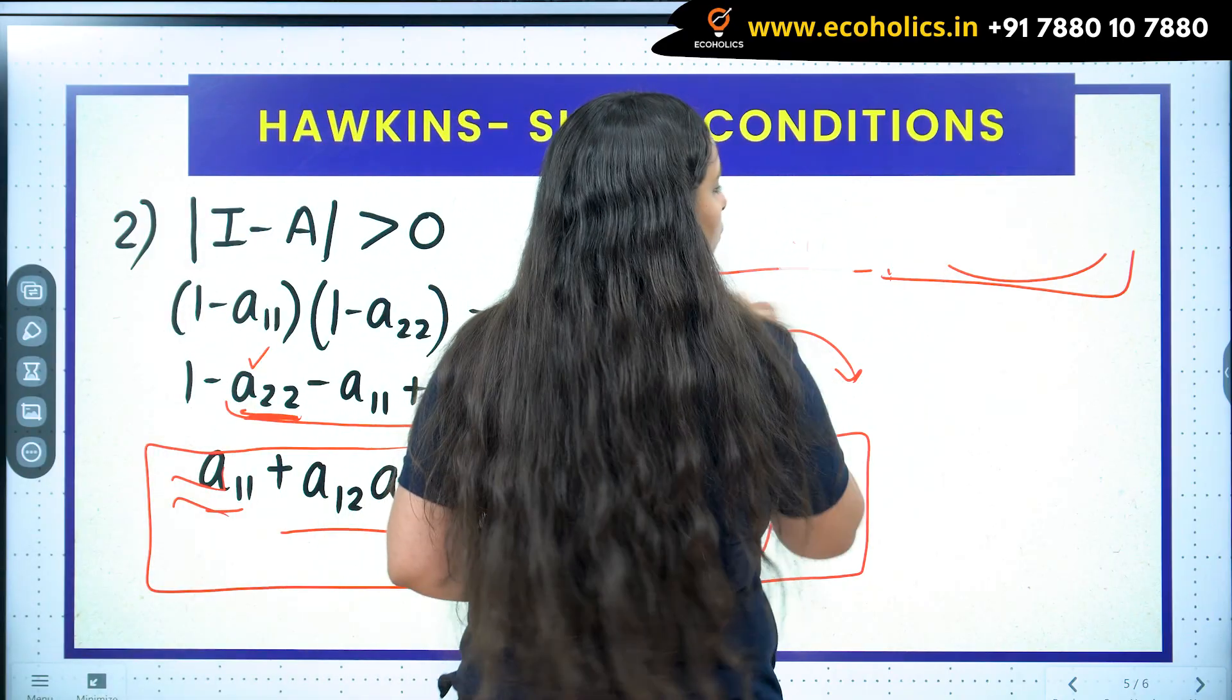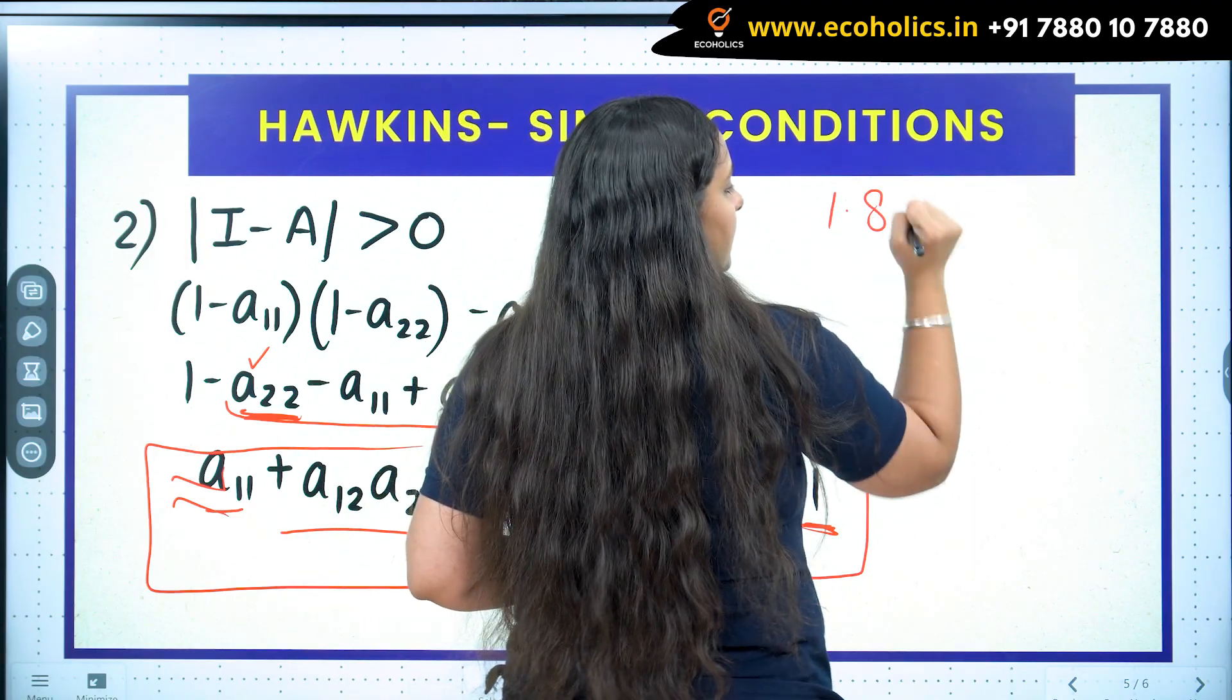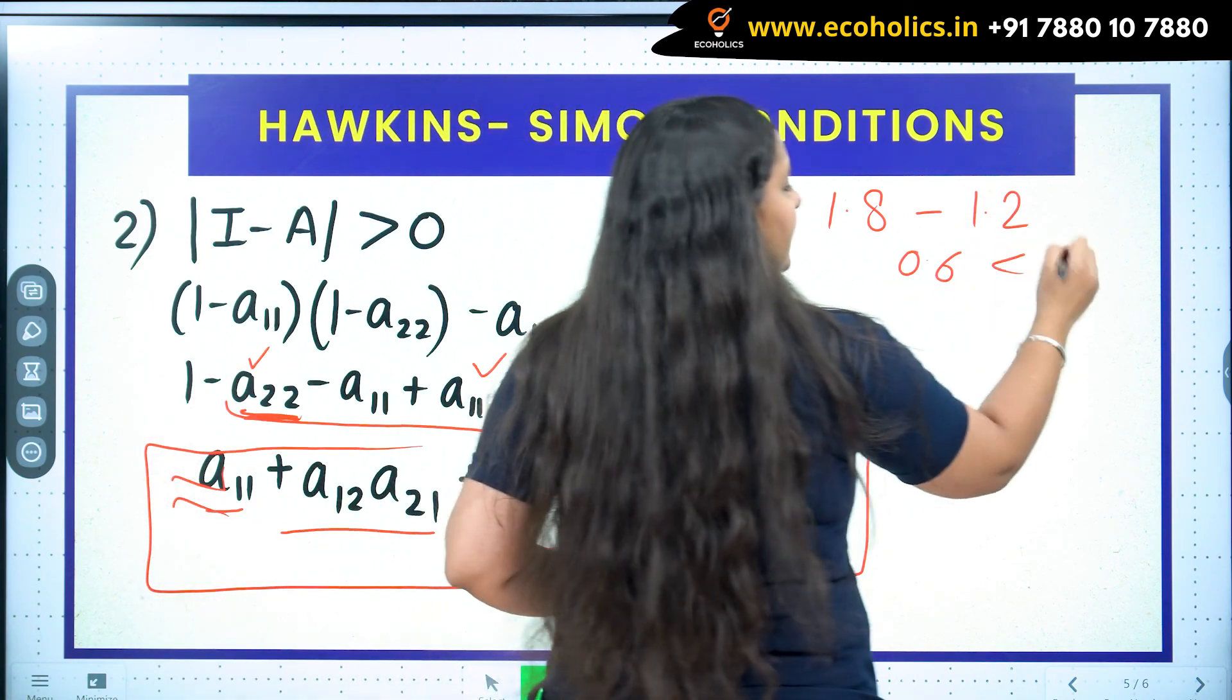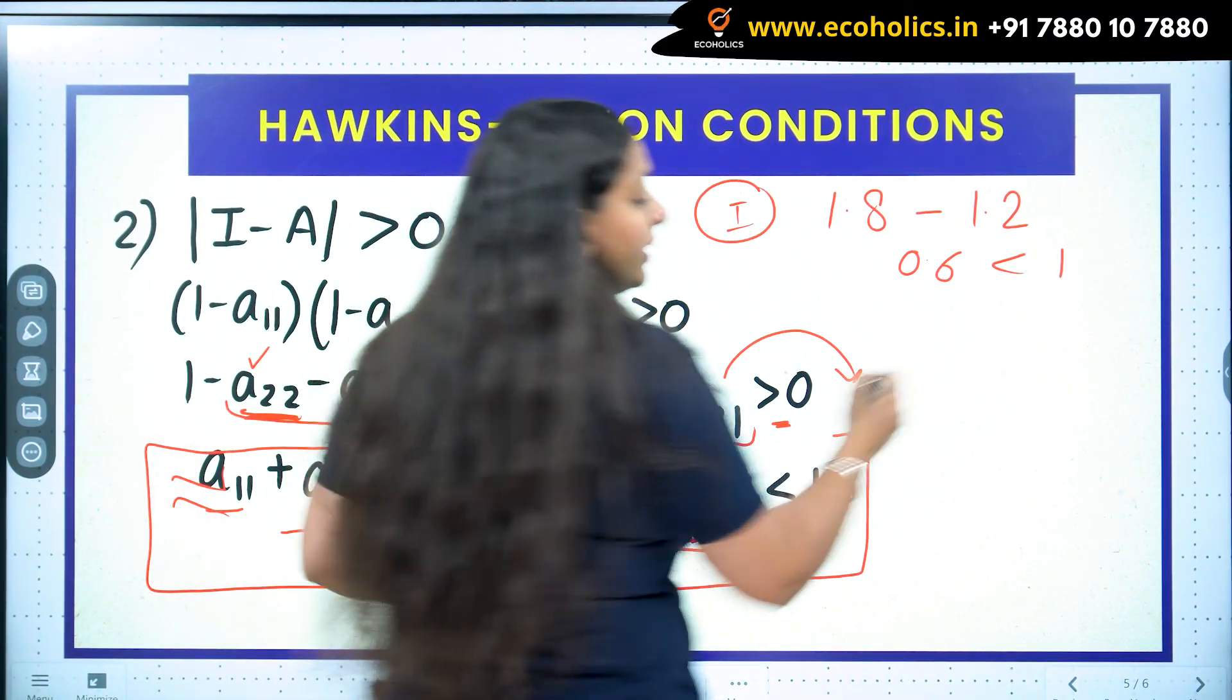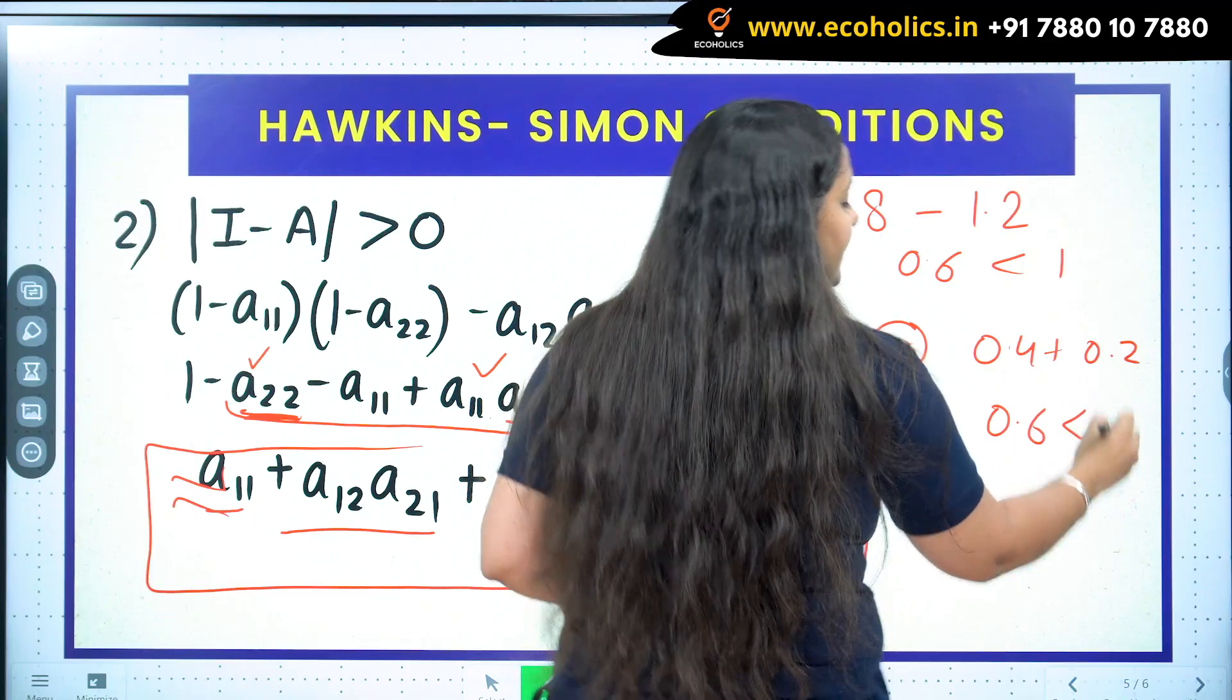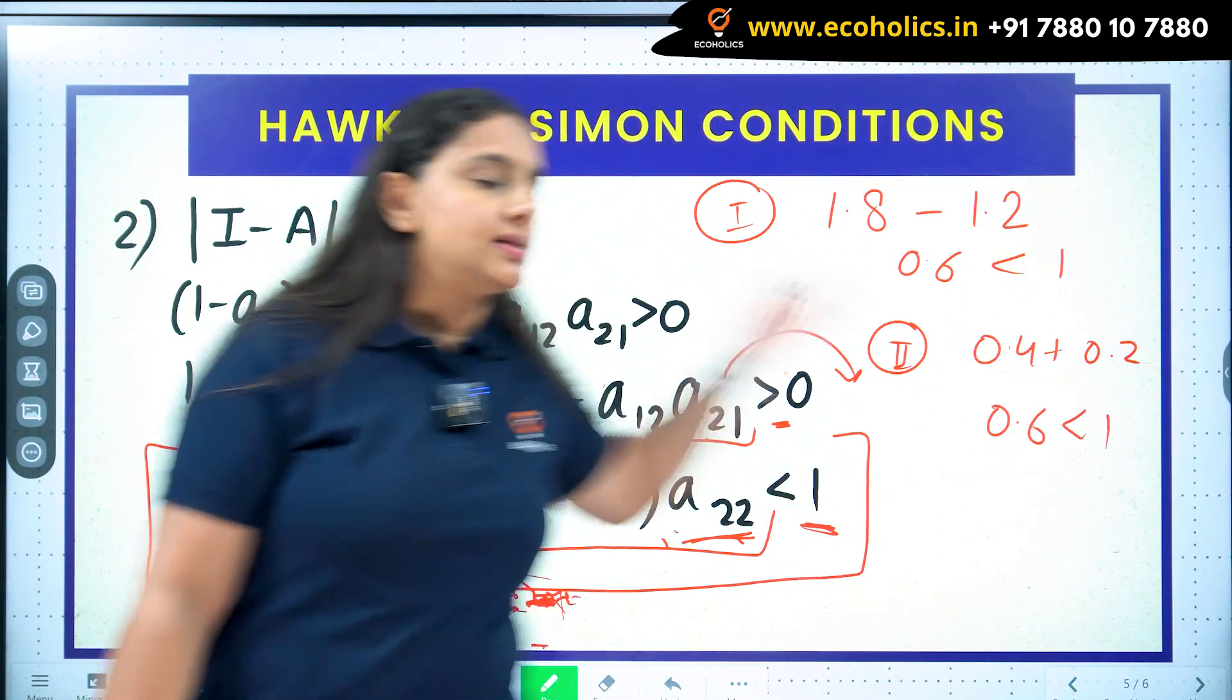There is one thing here if you pay attention. Let's say if I have this thing: 1.8 minus 1.2, what am I going to get? I will get 0.6, which is less than 1. This is the first method to get a number less than 1. The other method is 0.4 plus 0.2—this is also 0.6, which is less than 1. So either I subtract two numbers to get a number less than 1, or I add two numbers to get a number less than 1.